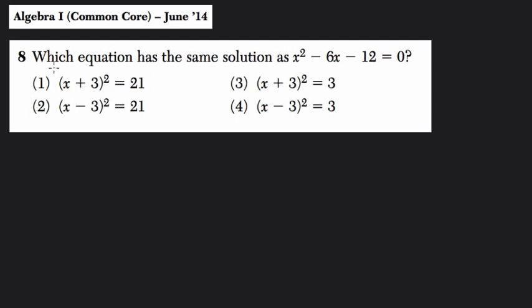Alright, so in this problem, let's read it. They're saying which equation has the same solution as x squared minus 6x minus 12 equals 0. So they give us four choices, and when they're talking about solutions, they're really saying values for x in this case, because that's our variable that they're giving us.